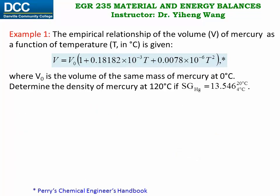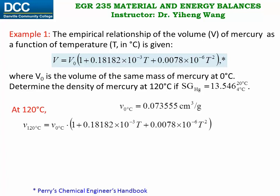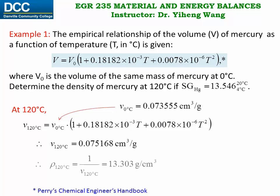Therefore, at 120 degrees C, we can again use this empirical relationship, substitute in the specific volume for mercury at 0 degrees C, set the temperature to 120, and solve for the specific volume of mercury at 120 degrees C. From here, the density is simply the reciprocal of the specific volume: 13.303 g per cubic centimeter. Compared to the density of mercury at 20 degrees C, this density is lower, which indicates that the volume of mercury has expanded at a higher temperature — that is the thermal expansion that mercury experiences.